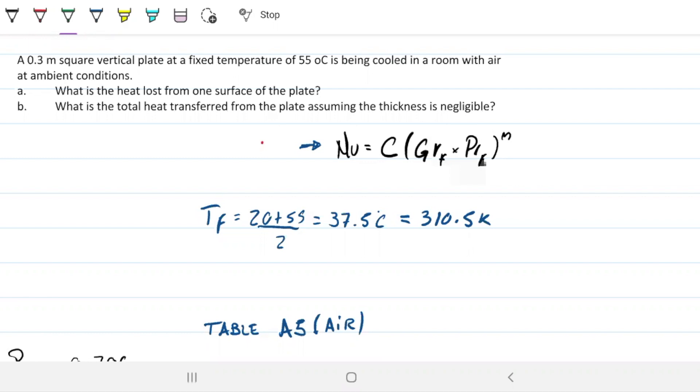A 0.3 meter square vertical plate at a fixed temperature of 55 celsius is being cooled in a room with air at ambient conditions. What is the heat loss from one surface of the plate? And part B, what is the total heat loss from the plate, assuming the thickness is negligible?